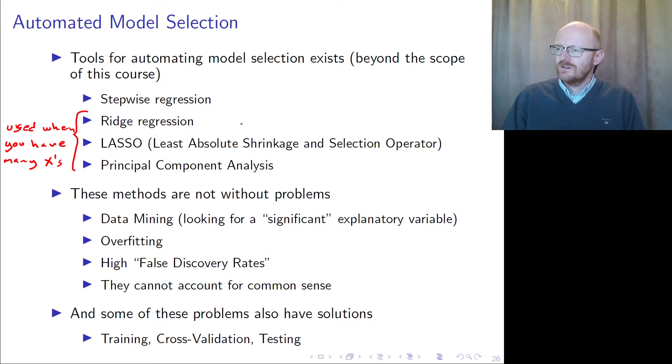You can also use stepwise regression. But there is a problem with just pouring on a lot of data and trying to get some insight from that. For example, if you're data mining and you're just running a regression with a lot of X variables, and you're looking for a significant explanatory variable, then you run the risk of overfitting.